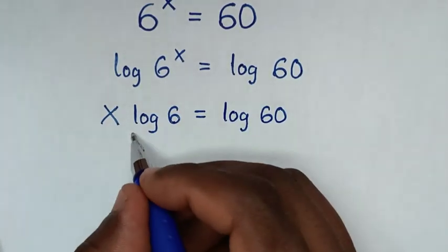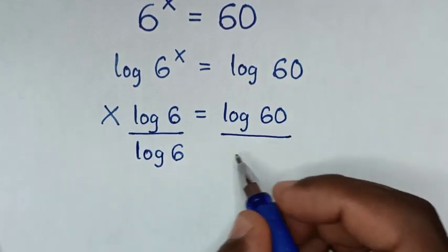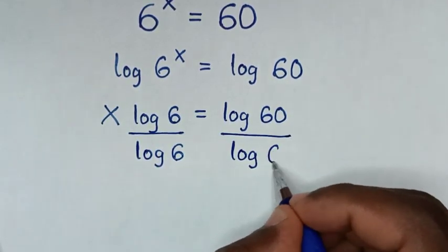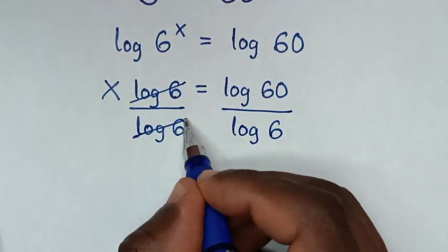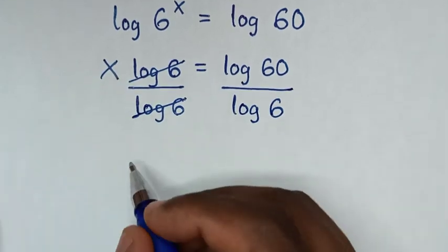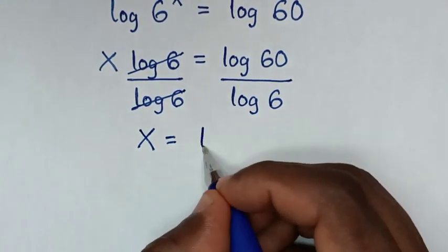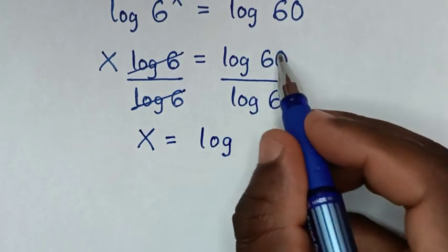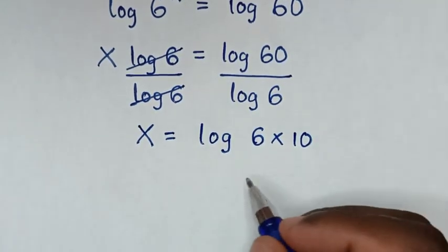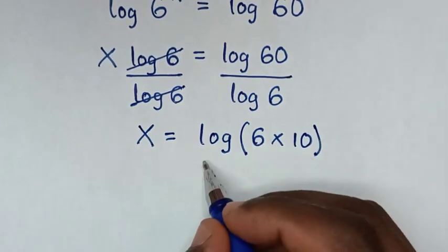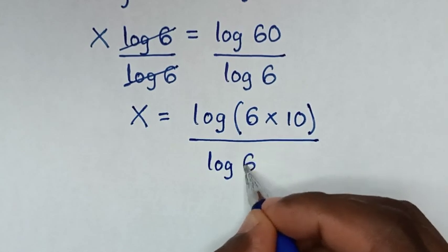Then we will divide by log of 6 on both sides. This log of 6 will cancel this log of 6. Then it will be x is equal to log of 60, and 60 is 6 times 10, so x equals log of 6 times 10 over log of 6.